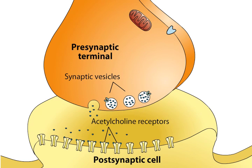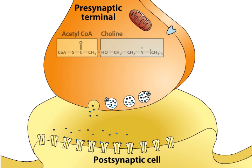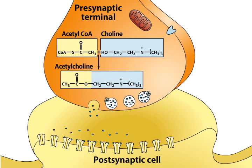Acetylcholine, abbreviated ACH, was the first neurotransmitter to be identified. Acetylcholine is synthesized in the nerve terminal from acetyl coenzyme A and choline in a reaction catalyzed by the enzyme choline acetyltransferase. Neurons that use acetylcholine as a transmitter are called cholinergic neurons.